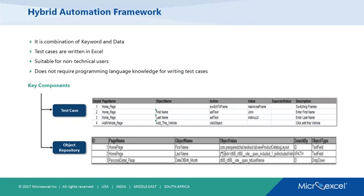The hybrid model is a combination of keyword and data. A keyword is essentially a function which you will be using — say, if you want to do a click or enter some text, there would be a function with that name: click, enter text. That acts as a keyword. And if you have any business function, say enter login, that can also be a keyword.